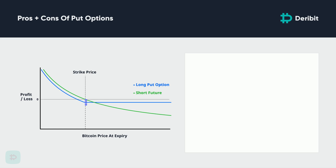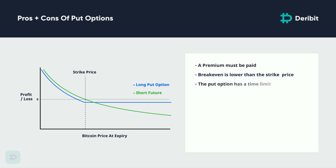Of course, there is also a downside to buying put options. Firstly, a premium must be paid, which means the breakeven price is lower than the strike price — and sometimes considerably so. How far away depends on the amount paid for the option contract. Secondly, the option has a time limit. The expiry date means the clock is ticking as soon as the option is purchased. If the underlying price fails to move sufficiently by the expiry date, the trade is over and will finish as a loser. So the put option buyer must not only be correct about the direction, but also the timing.